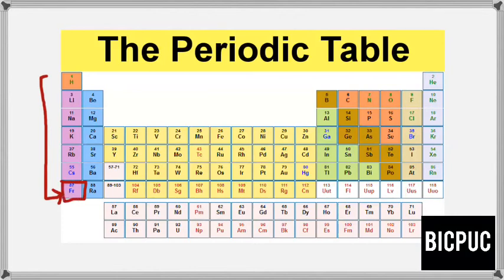We focus only from lithium to cesium. Including hydrogen, these elements contain one electron in their valence shell, which is present in the s-orbital. So their electronic configuration ends with ns¹.